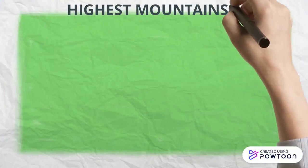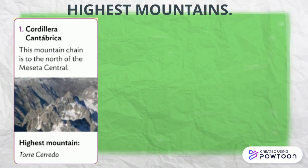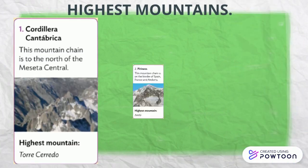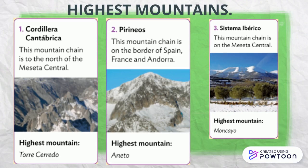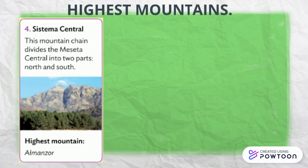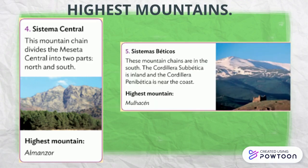What are the highest mountains in Spain? In the Cordillera Cantábrica, in the north of the Meseta Central, we have Torre Cerrero. In the Pirineos, between Spain and France, we have Aneto. In the Sistema Ibérico, on the Meseta Central, we have Moncayo. In the Sistema Central, which divides the Meseta Central into two parts, we have Almanzor. And finally, the Sistemas Béticos — these mountain chains are in the south. The Cordillera Subbética is inland, and the Cordillera Penibética is near the coast, with Mulhacén as the highest mountain.